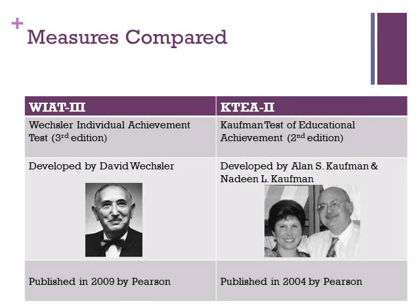The two measures I will be comparing are the Wechsler Individual Achievement Test, 3rd edition, also known as the WIAT-3, and the Kaufman Test of Educational Achievement, 2nd edition, also known as the KT-2. I have selected these measures because both are used in my district and are easily accessible at my school site. While both measures cover a broad range of academic domains, both also have comparable subtests of oral expression.